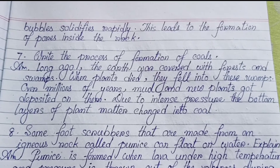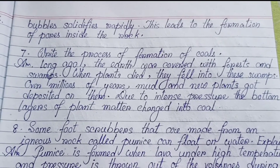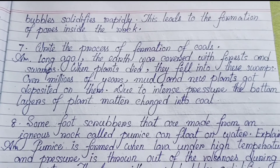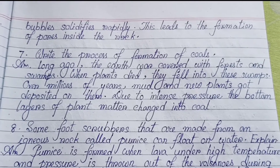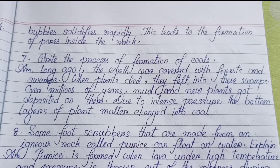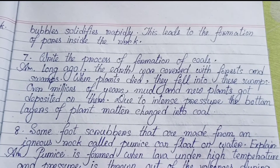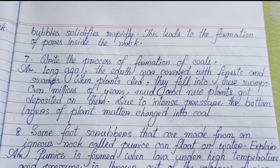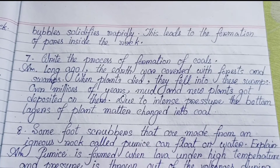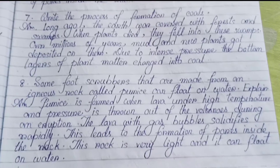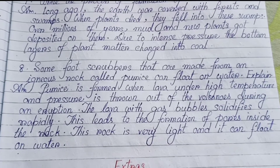Number seven: Write the process of formation of coal. Long ago, the earth was covered with forests and swamps. When plants died, they fell into these swamps. Over millions of years, mud and new plants got deposited on them. Due to intense pressure, the bottom layers of plant matter changed into coal.